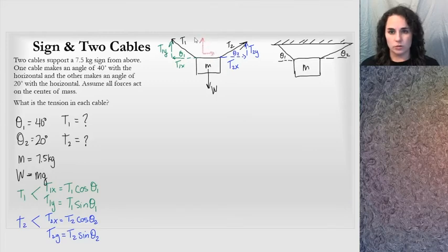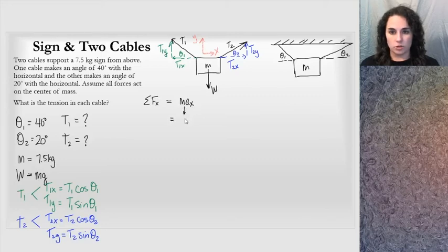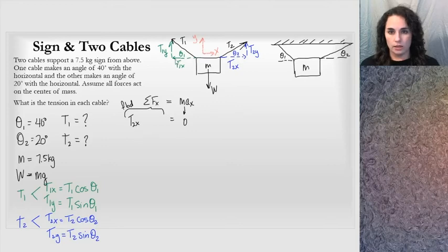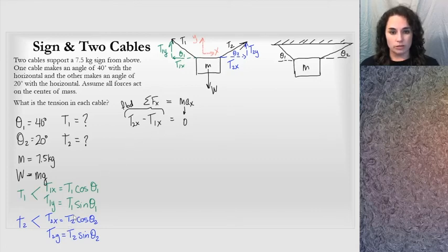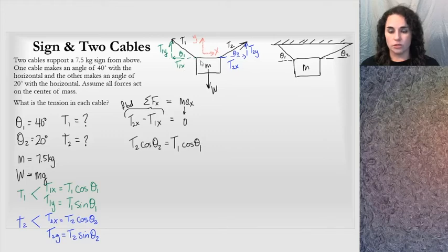I assign a coordinate system. In the X direction, the sign is not accelerating, so the sum of forces equals zero. The positive force is T2x and the negative force is T1x, giving T2 cosine theta2 minus T1 cosine theta1 equals zero, or T2 cosine theta2 equals T1 cosine theta1. T1 and T2 are the two unknowns; theta1 and theta2 are known. I can use this to get a ratio for substitution.